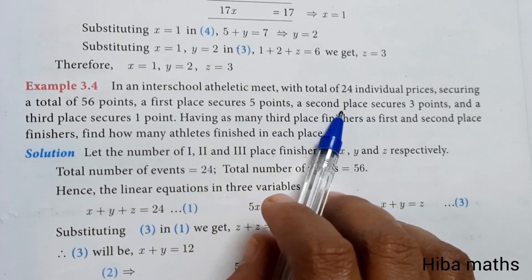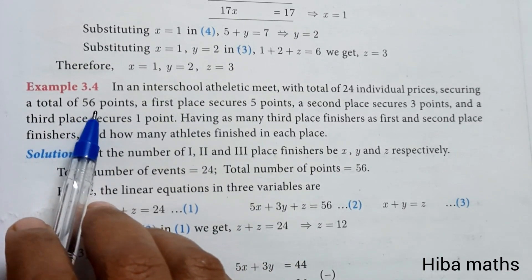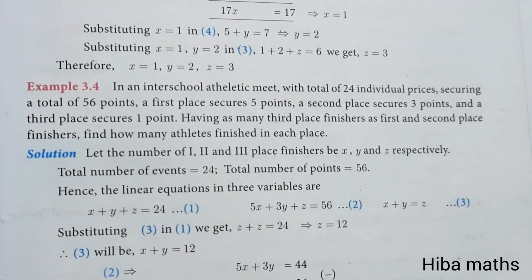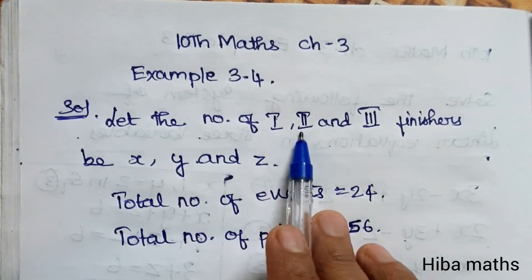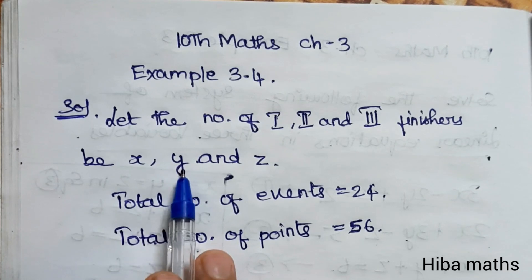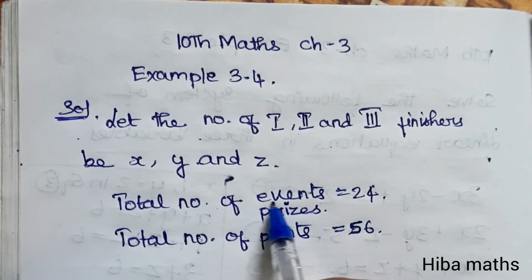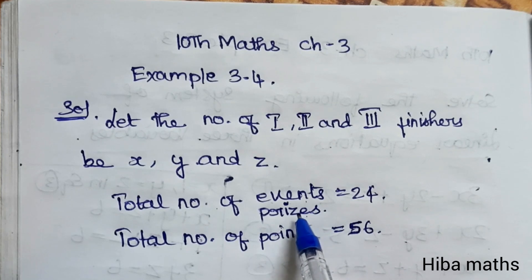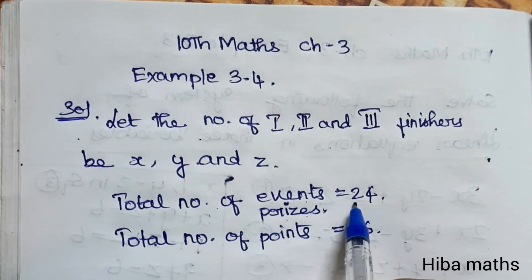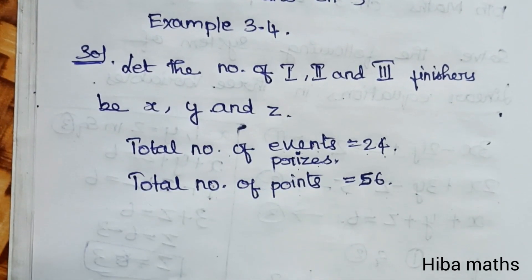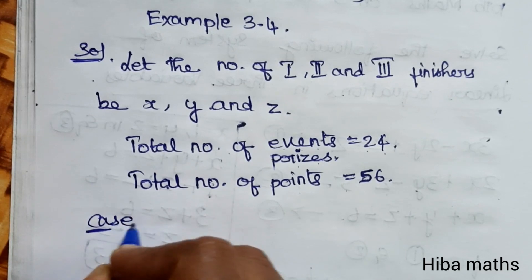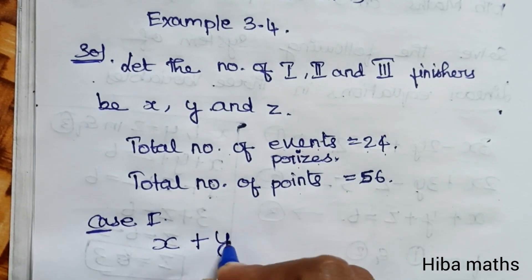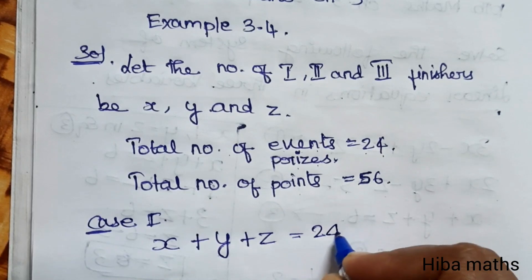We have first place as x, second place as y, and third place as z. The total number of individual prizes gives us the first equation: x plus y plus z equals 24. The total points scored gives us the second equation: 5x plus 3y plus z equals 56.